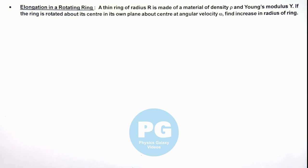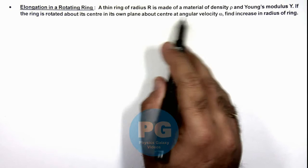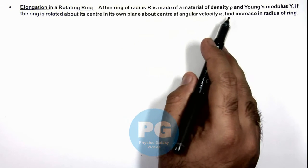In this illustration we'll analyze the elongation in a rotating ring. We are given that a thin ring of radius R is made of a material of density ρ and Young's modulus Y.